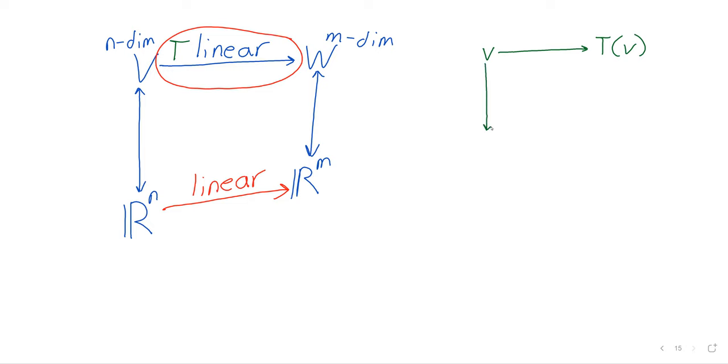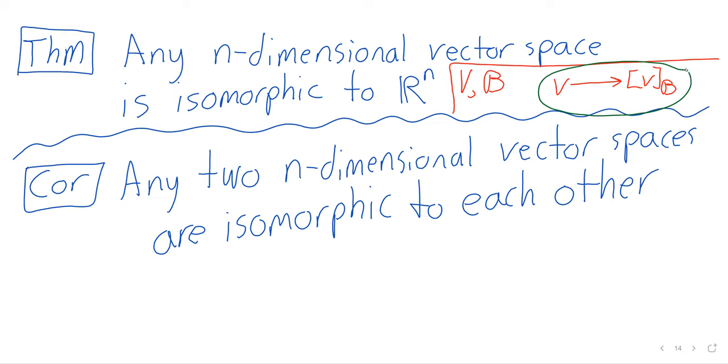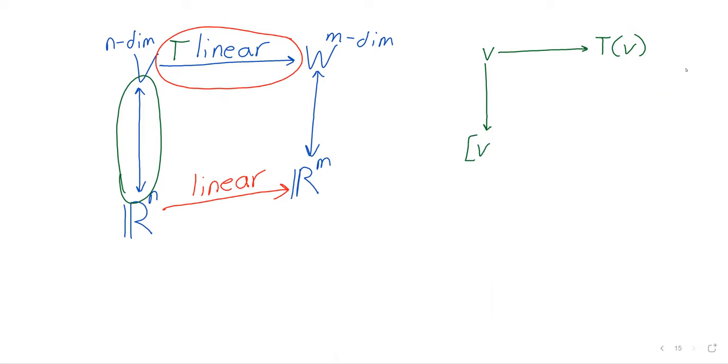So V is being sent to T of V. This isomorphism, the reason that V and R^n are identical, is this coordinate mapping. So V is identical to the coordinate mapping of V with respect to some basis.